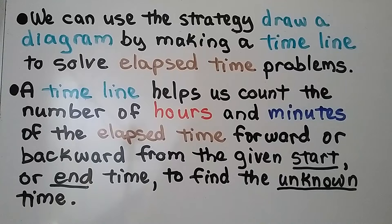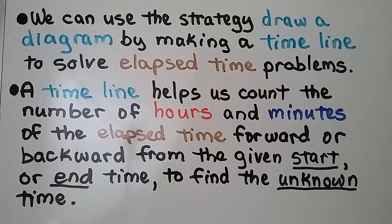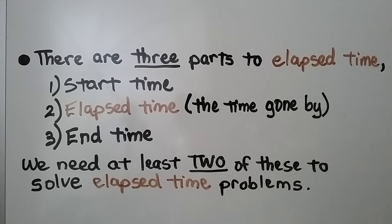We can use the strategy of drawing a diagram by making a timeline to solve elapsed time problems. A timeline helps us count the number of hours and minutes of the elapsed time forward or backward from the given start or end time to find the unknown time. There are three parts to elapsed time: a start time, an elapsed time (that's the time that's gone by), and the end time. We need at least two of these to solve elapsed time problems.